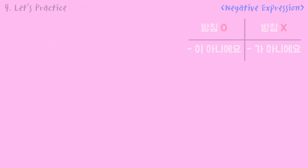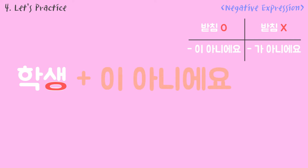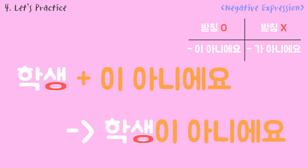Let's practice. If the noun is 학생, there is a 받침 like 이응. It is 이 아니에요. So it becomes 학생이 아니에요.